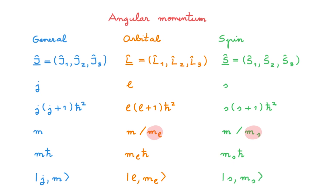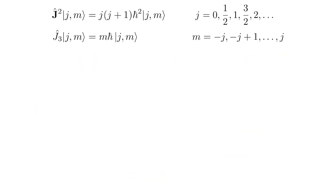The final thing I want to do is anticipate some discussion in the videos on orbital and spin angular momentum. Consider again the eigenvalue equations for j squared and j3, where j can be 0, 1/2, 1, 3/2, 2, and so on, and for a given j, m can be any of the values −j, −j+1, all the way to j in steps of 1. We derived these allowed values in the companion video using only the defining commutation relation of j. That derivation tells us these are the possible values of j and m, but it does not tell us that they must all occur — only that they can occur.